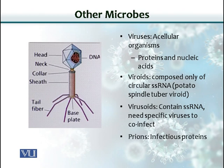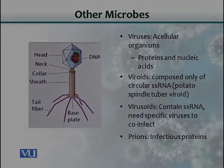The last category is called prions. Interestingly, these are proteins in nature, but they are infectious and can cause disease.